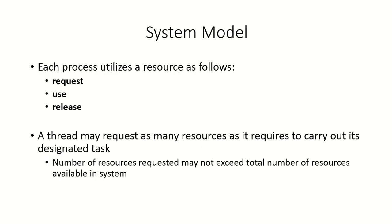Each process, whenever it wants to use a resource, follows three steps: first it requests the resource, then it uses that resource, and then it releases it. A thread may request as many resources as it requires to carry out its assigned task, as long as the number does not exceed the total number of resources available in the system. If the number exceeds the total available, that request cannot be granted.